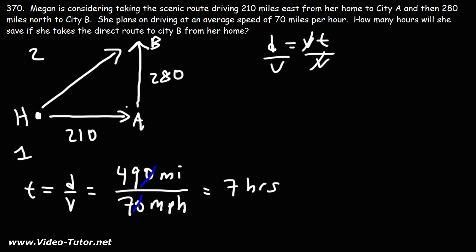Now what if she takes the direct route? If you notice, this is the 3-4-5 right triangle. So 3 times 70 is 210, 4 times 70 is 280, so 5 times 70 is 350. So this is 210, 280, 350.